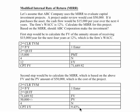Something very interesting here is that 9.43% is less than my weighted average cost of capital. So from this computation, I would not make the investment, because my Modified Internal Rate of Return is less than my weighted average cost of capital. And there you have a quick overview on how to compute a Modified Internal Rate of Return.